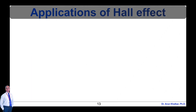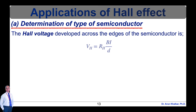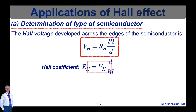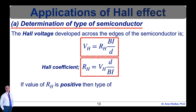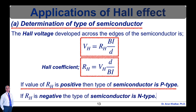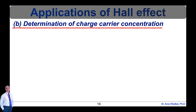Now let's see the determination of the type of semiconductor. The Hall voltage developed across the edges of the semiconductor is V_H = R_H × B·I / d, where R_H can be rearranged as R_H = V_H·d / (B·I). If the value of R_H is positive, the semiconductor is p-type; if R_H is negative, the semiconductor is n-type. From this equation we can easily determine the type of semiconductor.